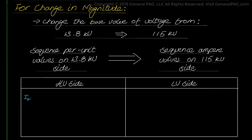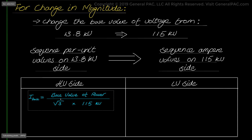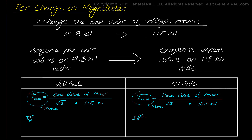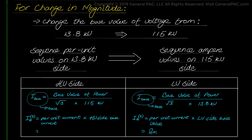On the high voltage side, the base current equals the base value of power divided by the square root of 3 times 115 kV, giving the base current on the high voltage side. On the low voltage side, we take the base value of power and divide by the square root of 3 times 13.8 kV, giving the base current for the low voltage side. For both sides, we calculate the ampere values by multiplying the per unit current by the appropriate base, using the right formulas to get either the high voltage or low voltage current in amperes.